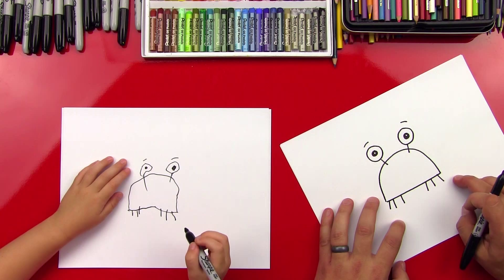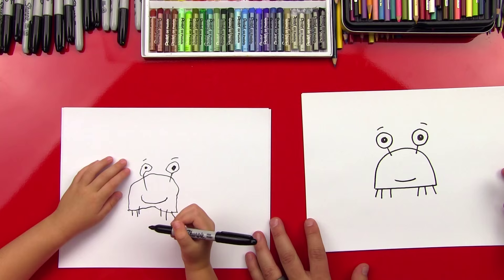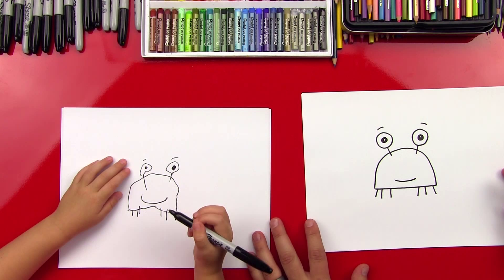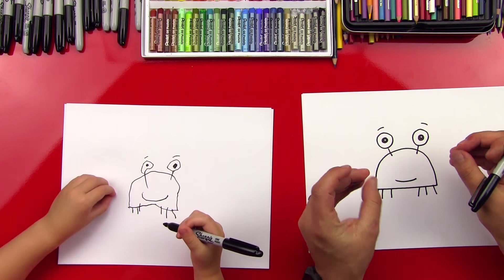All right, now let's draw a little smile. Draw a little smile right here for his mouth. Perfect. Okay, what's our crab missing? The claw things. Yeah, the claw things, the little pinchers on the side, huh? Yeah. Okay, you ready to draw them?